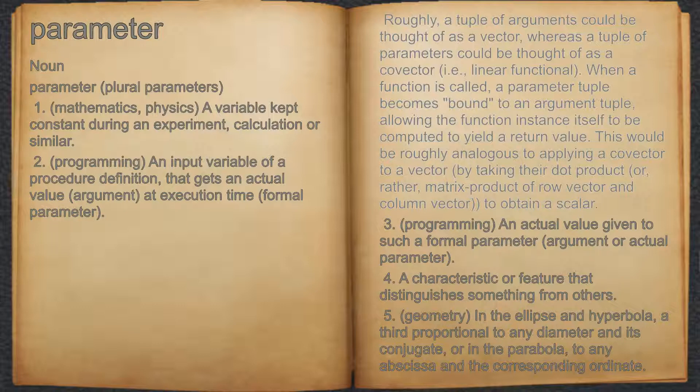For example, roughly, a tuple of arguments could be thought of as a vector, whereas a tuple of parameters could be thought of as a covector, i.e. linear functional. When a function is called, a parameter tuple becomes bound to an argument tuple, allowing the function instance itself to be computed to yield a return value. This would be roughly analogous to applying a covector to a vector, by taking their dot product or, rather, matrix product of row vector and column vector to obtain a scalar.